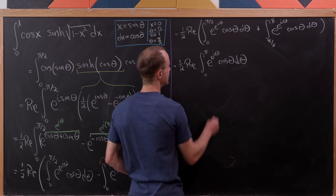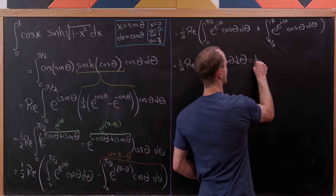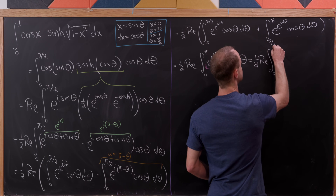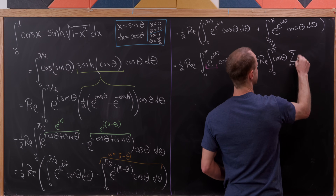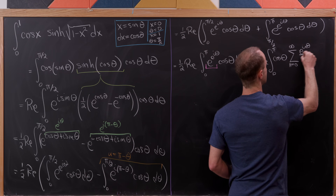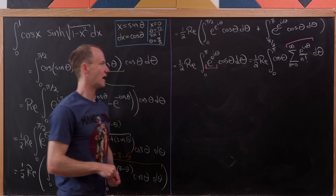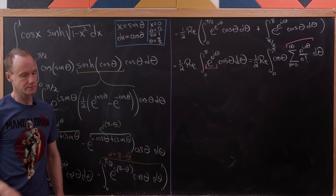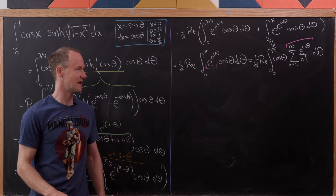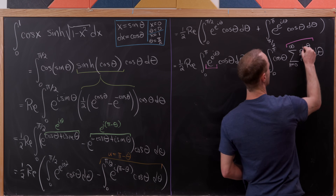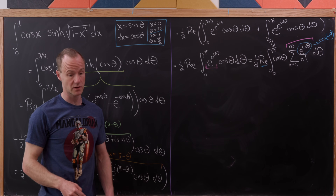We expand e to the e to the i theta as its Taylor series: the sum from n equals 0 to infinity of e to the i n theta over n factorial. Bringing the sum outside the integral and taking the real part of e to the i n theta, which equals cosine of n theta, reduces everything to real components: one half times the sum from n equals 0 to infinity of 1 over n factorial times the integral from 0 to pi of cosine theta times cosine n theta d theta.